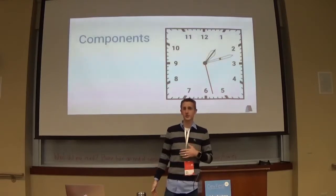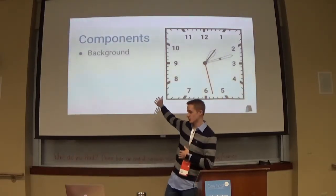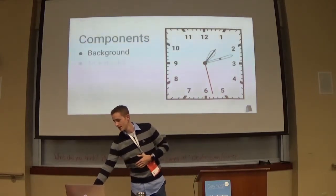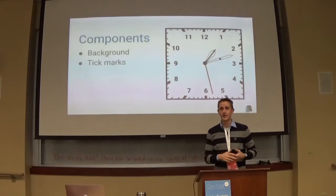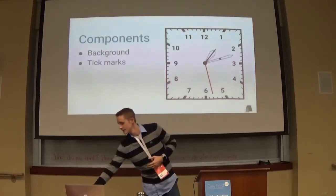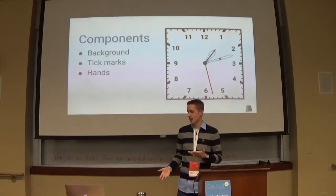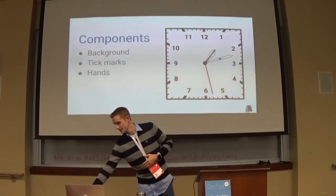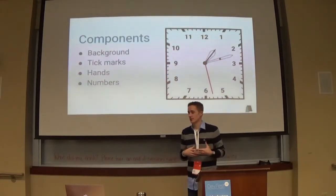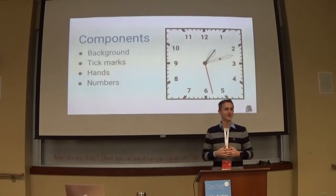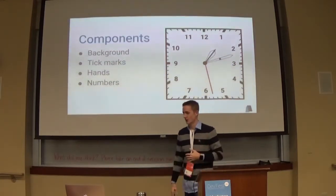The basic components of an analog watch are: the background — in this case, white; the tick marks that go all the way around the watch identifying the hours and minutes; the hands to tell you specifically what time it is; and the numbers, which really help me because I'm not used to reading an analog watch. Without the numbers, it takes me a couple minutes to figure out what time it is.